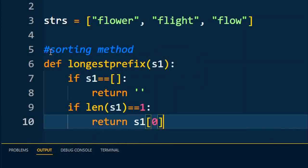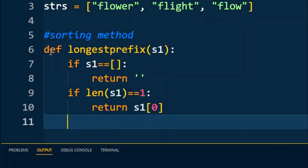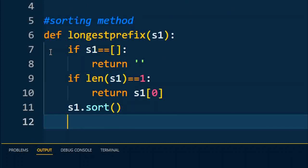If the string consists of more than one character in a list, then first of all we are going to sort the given list by using the sort method. We are going to sort the complete list.